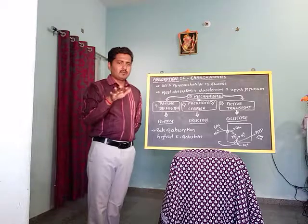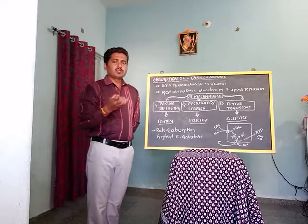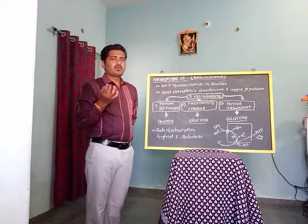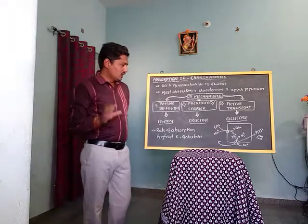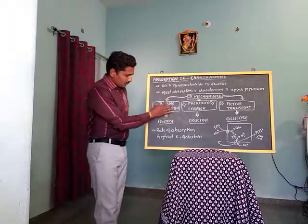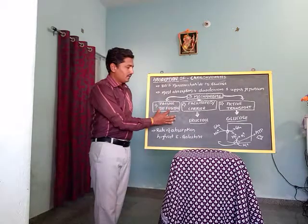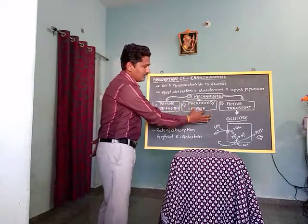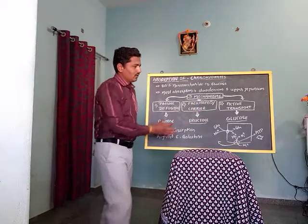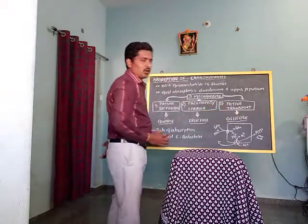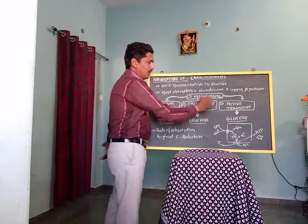Three mechanisms help in the absorption of glucose, fructose, and galactose molecules. The first mechanism is passive diffusion, the second is facilitated or carrier mechanism, and the third is active transportation.